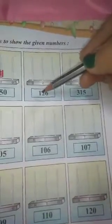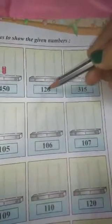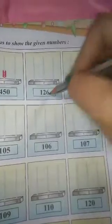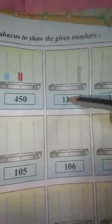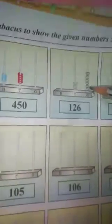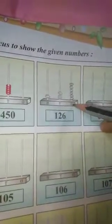It is 126. In the ones place we have six, so we will draw six beads — one, two, three, four, five, six. In the tens place we have two, so we will draw two beads — one, two. And in the hundreds place we have one, so only one bead. So it is 126.